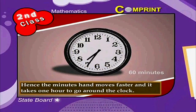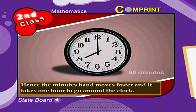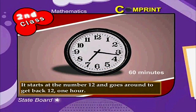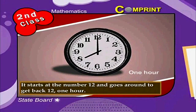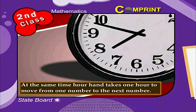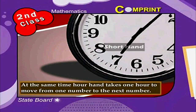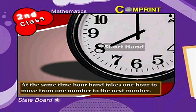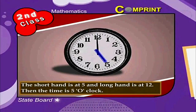Hence the minutes hand moves faster, and it takes 1 hour to go around the clock. It starts at the number 12 and goes around to get back to 12 — that is 1 hour. At the same time, the hour hand takes 1 hour to move from one number to the next number.